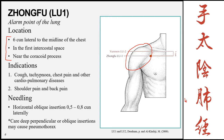The needle direction for Lung 1 is a horizontal oblique insertion, 0.5 to 0.8 Cun laterally. A horizontal oblique insertion is midway between oblique and horizontal — approximately 45 degrees below horizontal. Care must be taken not to insert the needle perpendicularly or obliquely toward the medial aspect, as needling in both these directions carries the risk of puncturing the lungs, which are situated in this region.